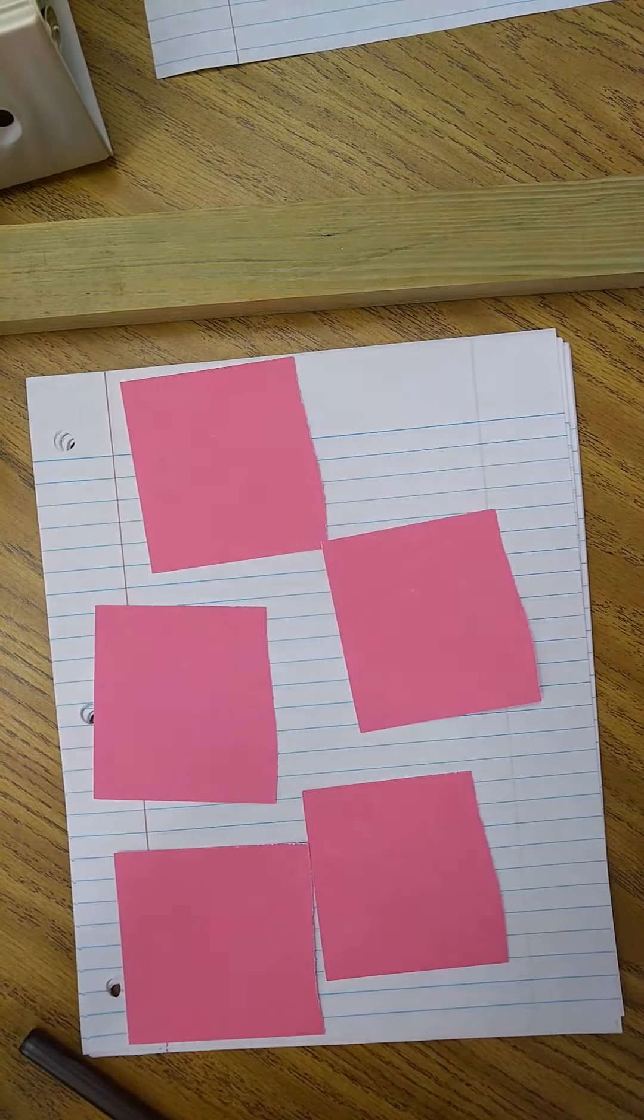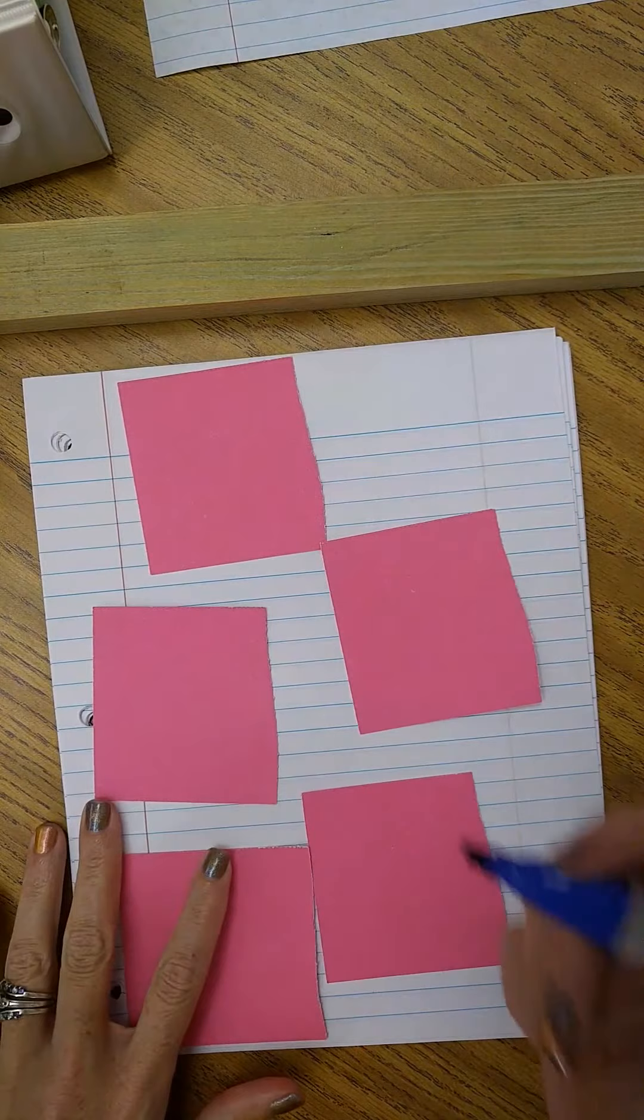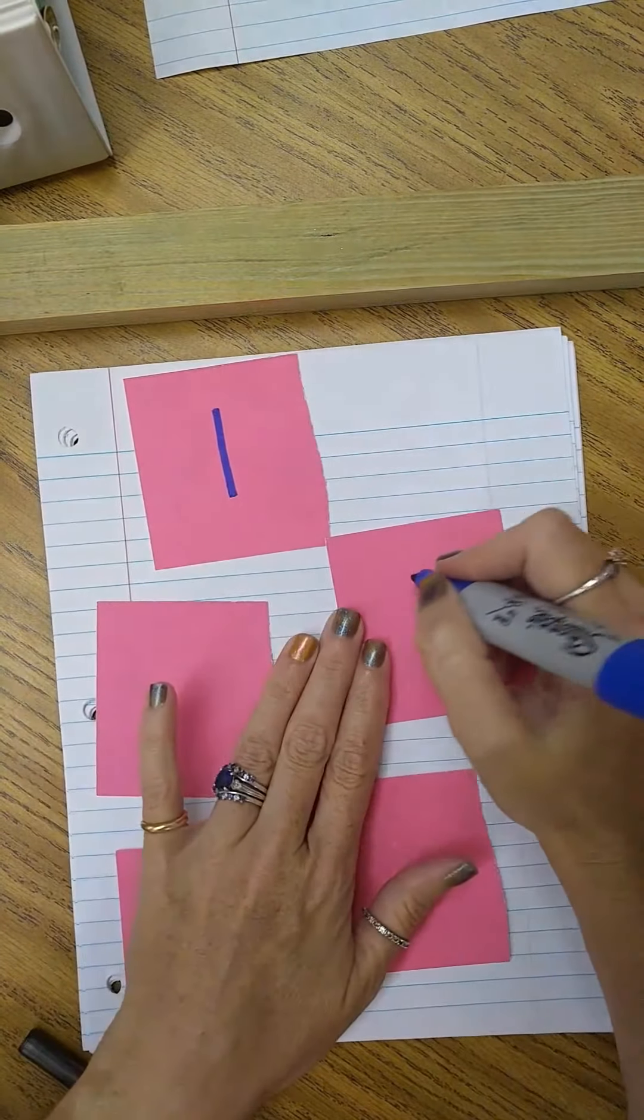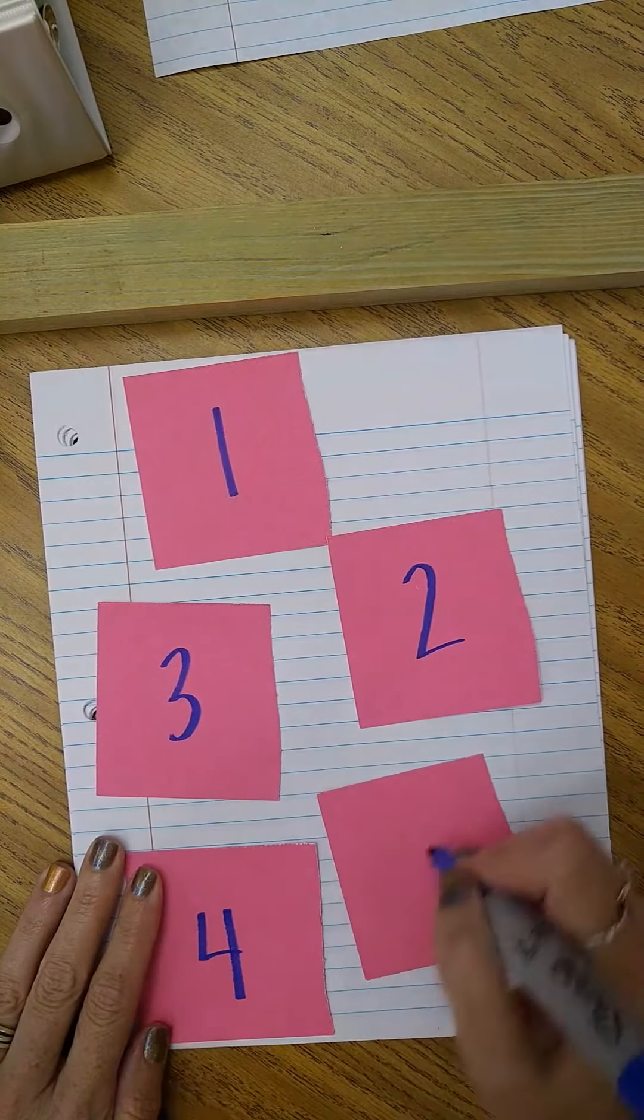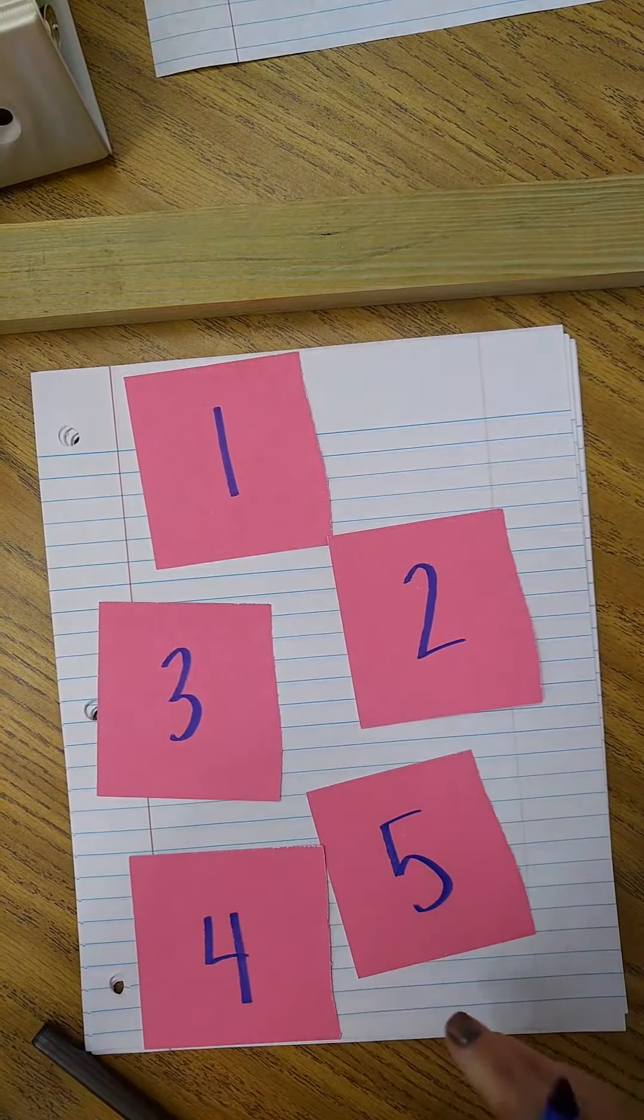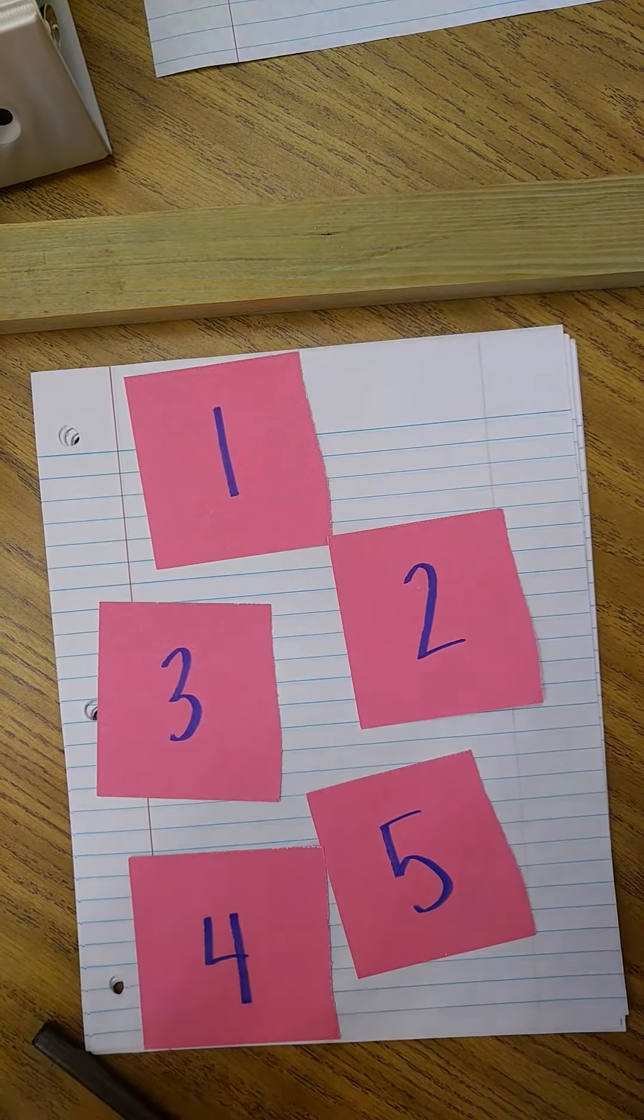So the kids will be given it on a piece of paper. I'm doing it with manipulatives here, actual cards, but the kids will have number cards and they will have to create a number given certain guidelines.